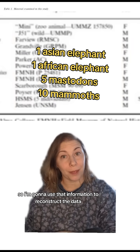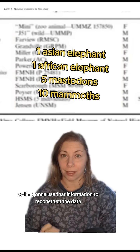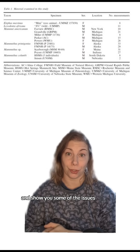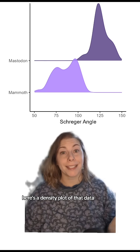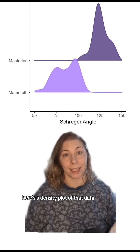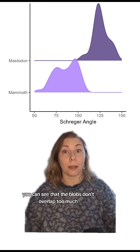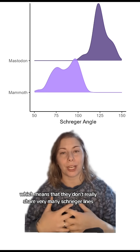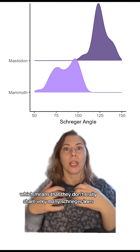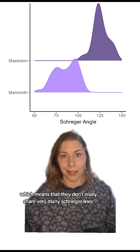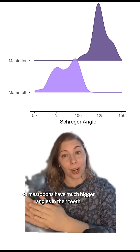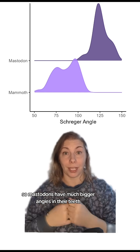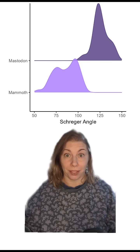I'm going to use that information to reconstruct the data and show you some of the issues. Here's a density plot of that data. You can see that the blobs don't overlap too much, which means they don't really share very many Schreger lines — so mastodons have much bigger angles in their teeth than mammoths do.